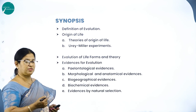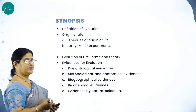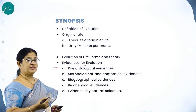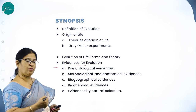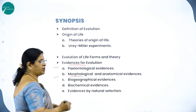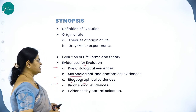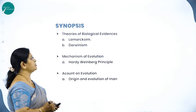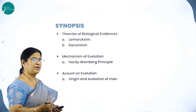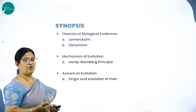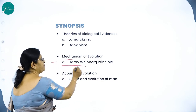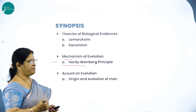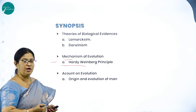Stanley Miller's experiment provided evidence for chemical evolution. Other evidences for evolution include paleontological evidence (study of fossils), morphological and anatomical evidences, biogeographical evidences, biochemical evidences, and evidences by natural selection. Theories of biological evolution were put across by Lamarckism and Darwinism — Jean-Baptiste Lamarck and Charles Darwin, the father of evolution. The mechanism of evolution was explained by the Hardy-Weinberg principle, and the chapter also covers the origin and evolution of man.